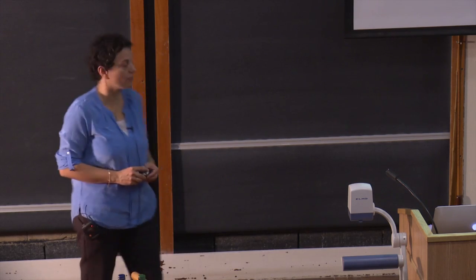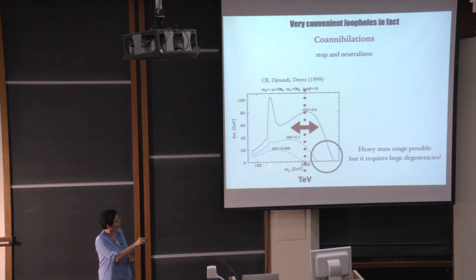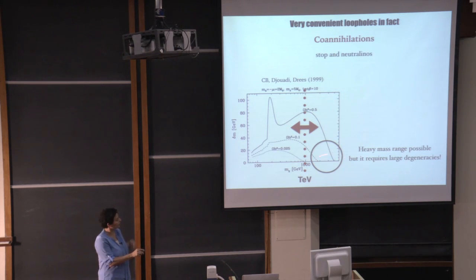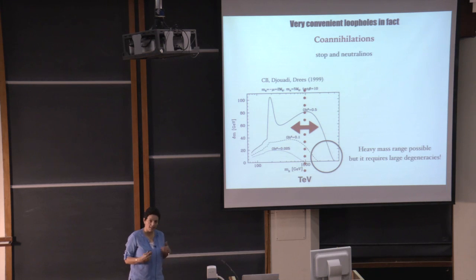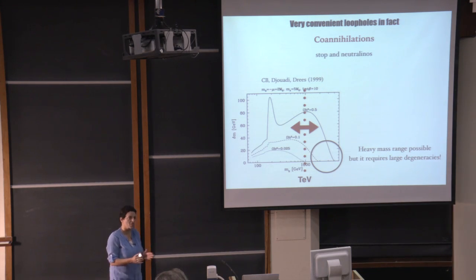What makes co-annihilation extremely interesting is that you can look at the whole mass range, not just a few TeV. With stop–neutralino co-annihilation you can actually reach masses around 2 TeV, and in principle up to 4 TeV. So co-annihilation was a way to say: the Lee-Weinberg limit is correct assuming pure annihilation, but with co-annihilation you can shift the bound a little — not dramatically, but it opens the parameter space somewhat.